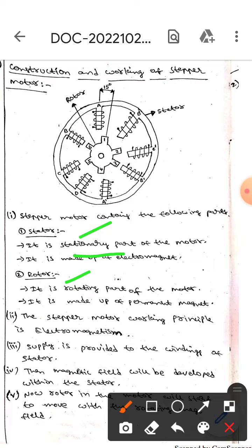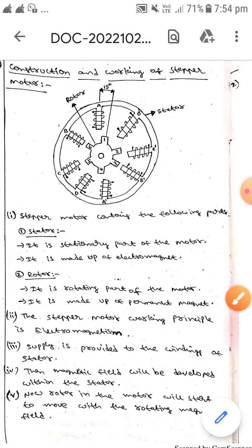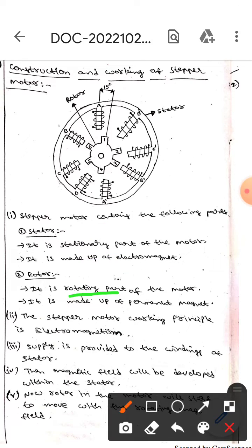Stator is the stationary part; it is made up of electromagnet. Whereas rotor is the rotating part; it is made up of permanent magnet.